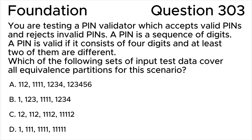ISTQB Foundation Level version 3.0, question 3. You are testing a PIN validator which accepts valid PINs and rejects invalid PINs. A PIN is a sequence of digits. A PIN is valid if it consists of four digits and at least two of them are different. Which of the following sets of input test data cover all equivalence partitions for this scenario? Option A: 1112, 1111, 1234, 123456.